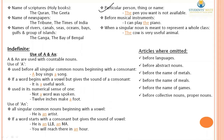For example: 'The pen you want is not available.' This sentence is divided into two different clauses, and in both clauses, the pen is being referred to specifically — 'The pen you want is not available.'